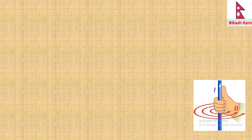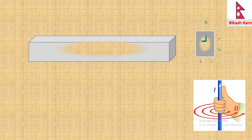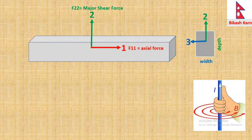For the forces, moment, deflection of a beam, force acting along local 1, that is along length, is axial force, denoted by F11. Similarly, for gravity load acting on beam, F22 will be major shear and F33 will be minor.